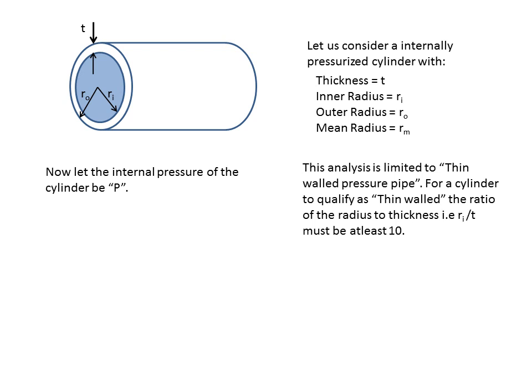For a cylinder to qualify as thin-walled, the ratio of the radius to thickness — i.e., Ri divided by T — must be at least 10, meaning Ri/T should be greater than or equal to 10.